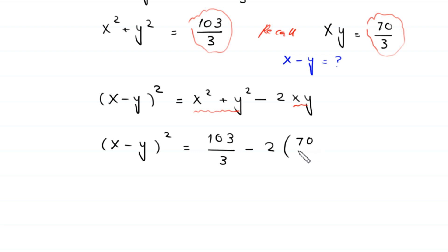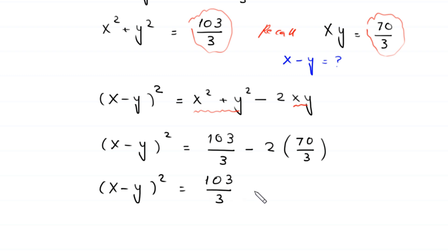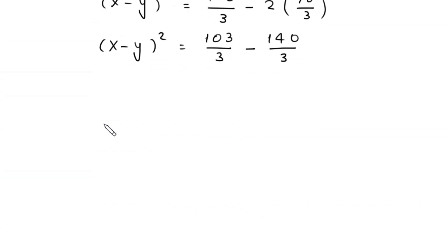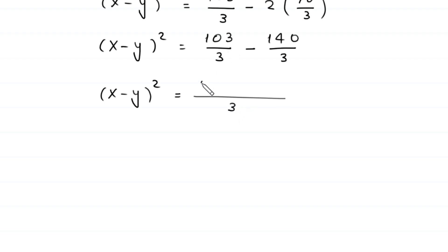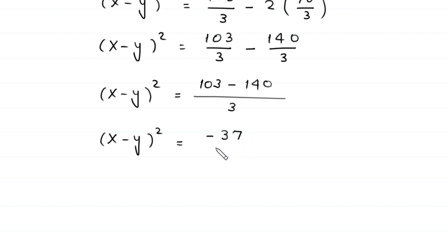So x minus y whole squared equals 103 over 3 minus 2 times 70 over 3, which is 140 over 3. With the common denominator 3, this becomes 103 minus 140 over 3. So x minus y whole squared is equal to negative 37 over 3.